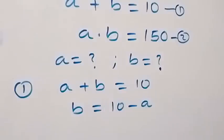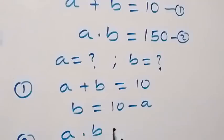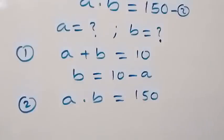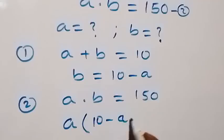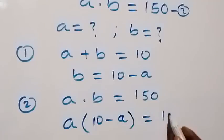From equation 2, which is A times B equals 150, let's substitute for B. That is, this becomes A times (10 minus A), which is equal to 150.